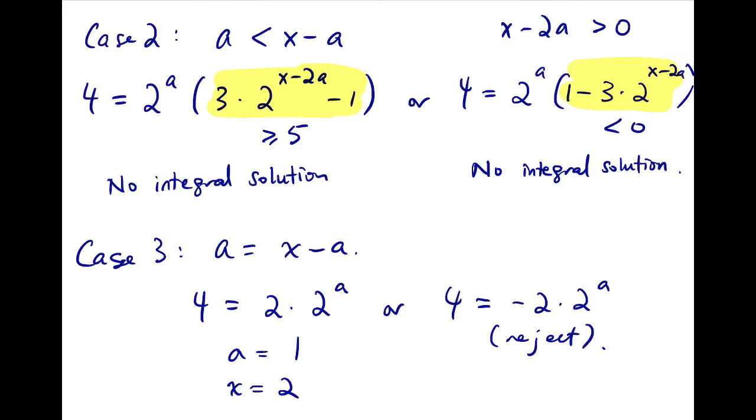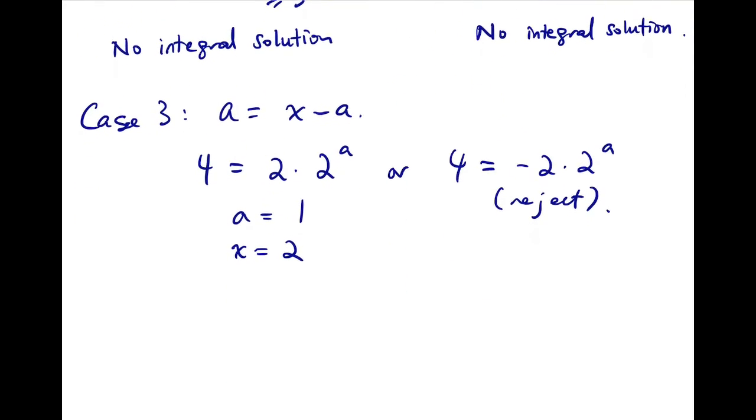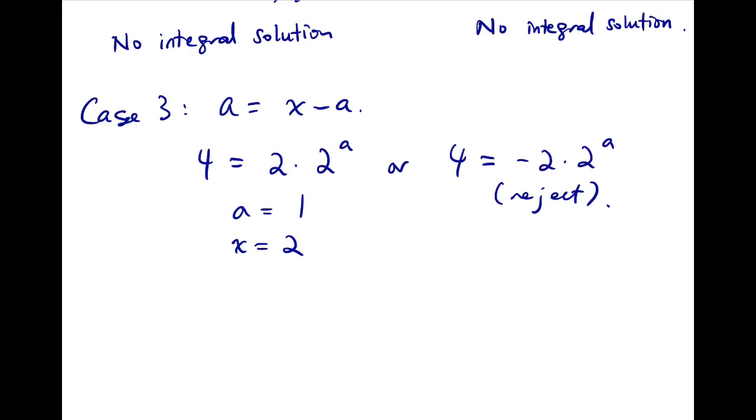Then x equals 2, because 1 equals x minus 1. So for this time, we put x equals 2 back into the equation, 3 times 2 to the 2 plus 4 is n squared. Now n here equals 4.